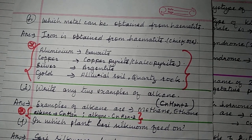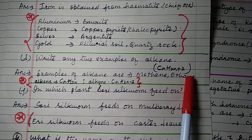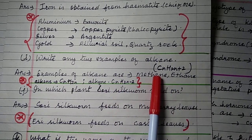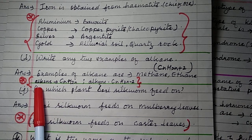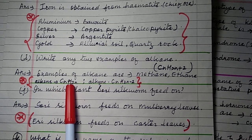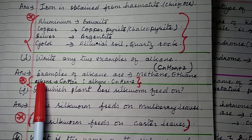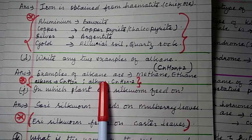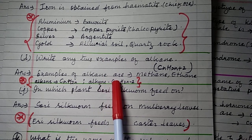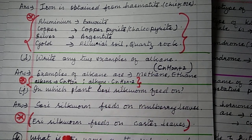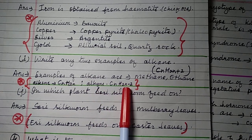Question 1I: Write any two examples of alkane. The general formula of alkane is CₙH₂ₙ₊₂. Examples of alkane are methane, ethane, propane, butane, etc. If alkene is asked, the general formula is CₙH₂ₙ and examples are ethene, propene, butene. If alkyne is asked, the general formula is CₙH₂ₙ₋₂ and examples are ethyne, propyne, butyne.